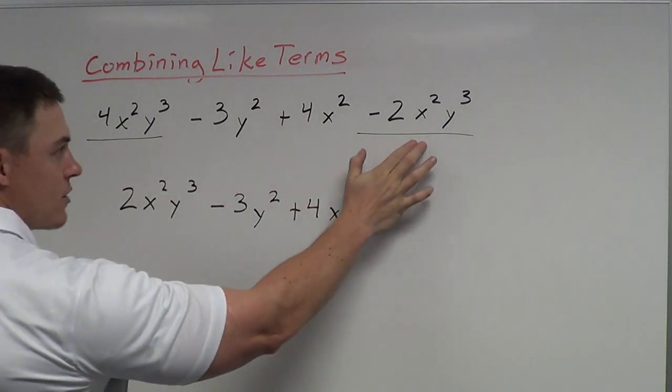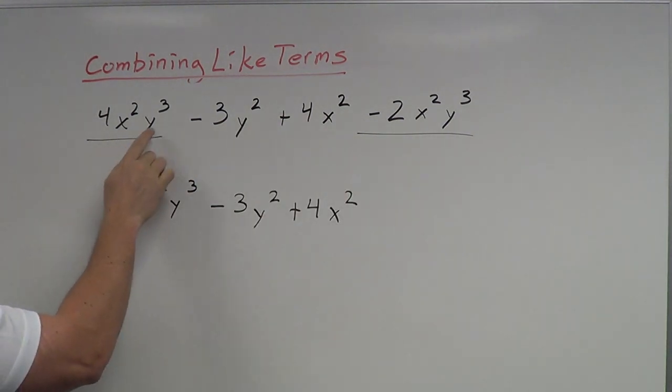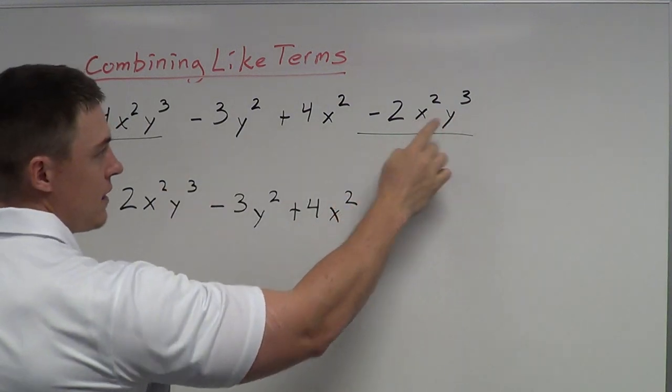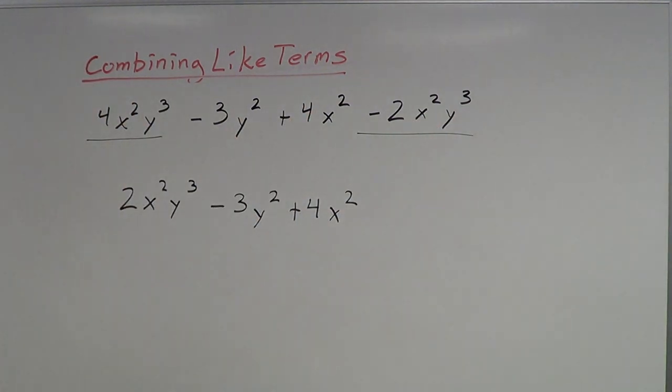The main concept that we want to get here is identifying like terms. Here are two like terms. They have the same variables to the same powers. Same variable, same power. We want to add or subtract the coefficients. So that's one example of combining like terms.